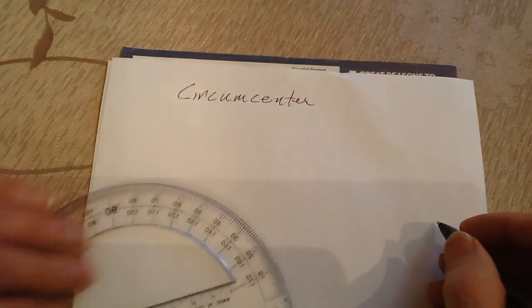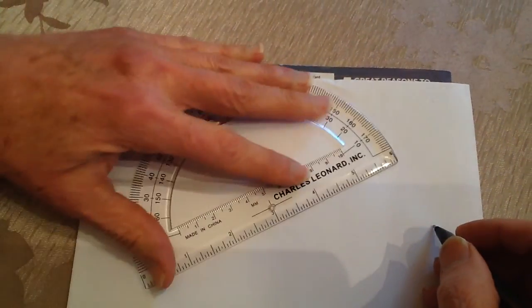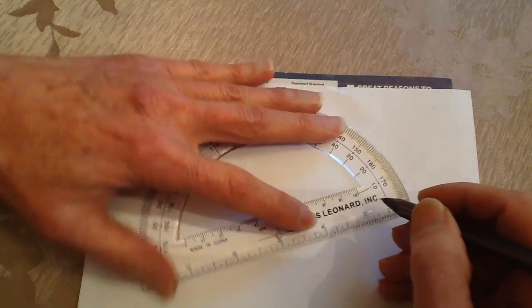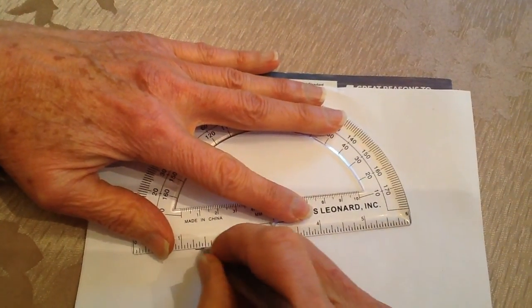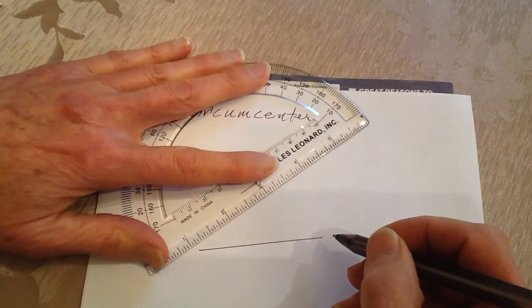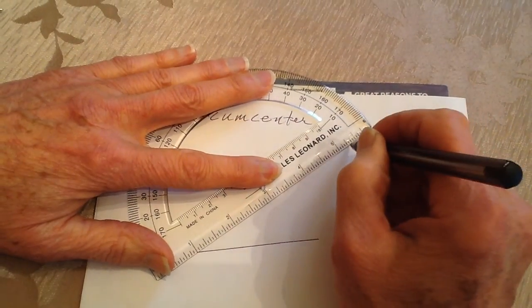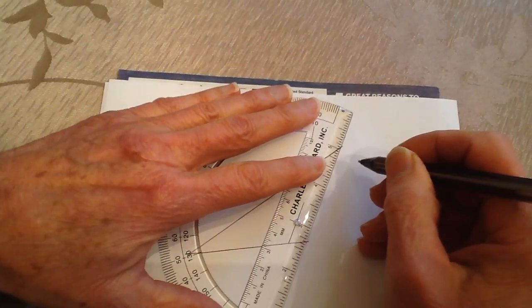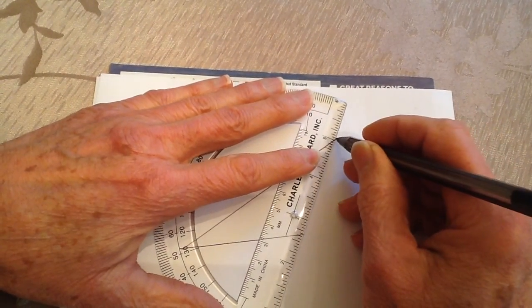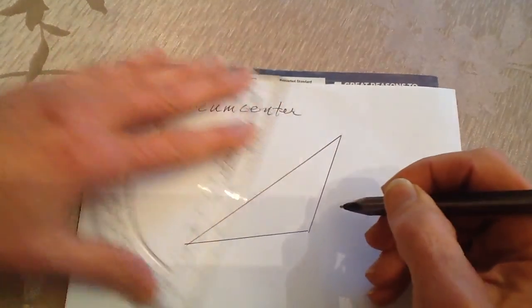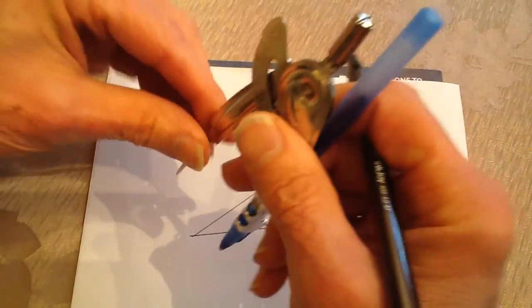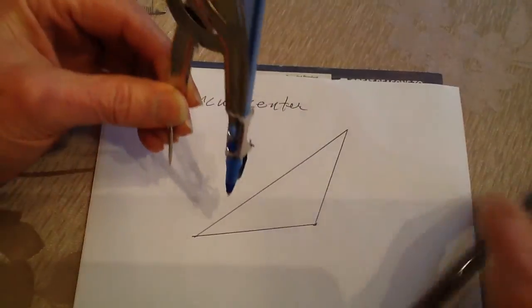And it's where the perpendicular bisectors intersect, so I'm going to draw myself a triangle here. I'm going to make sure that I get an obtuse because that's a little bit more difficult of a triangle to do the perpendicular bisectors where they meet. So here are our three vertices, these three sides, so I'm going to start with this side here.